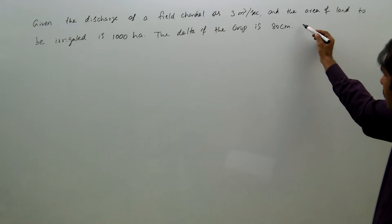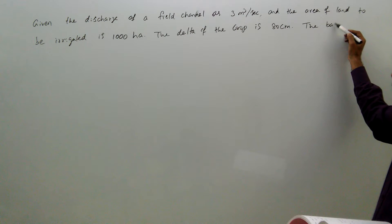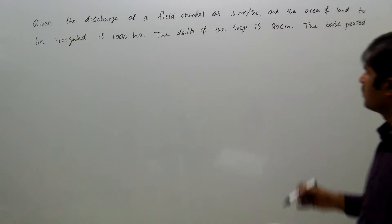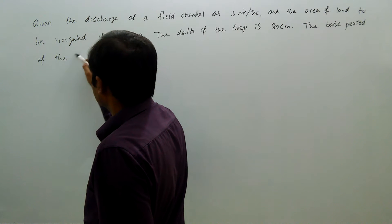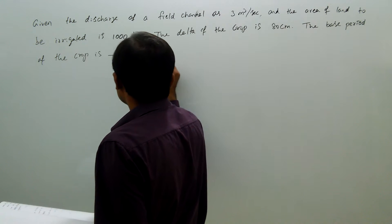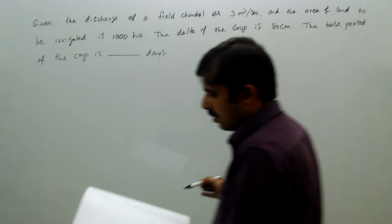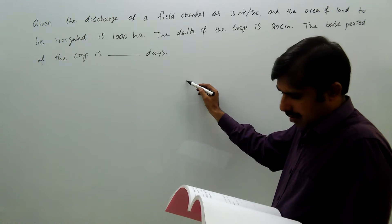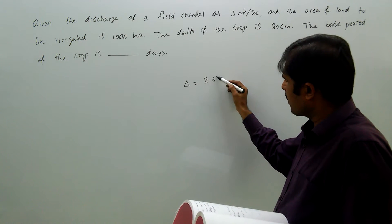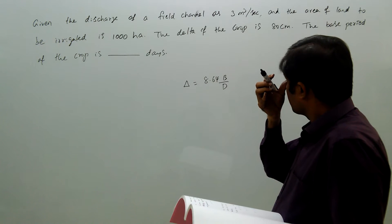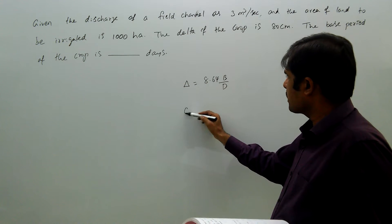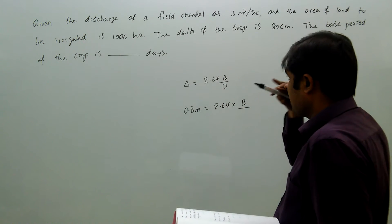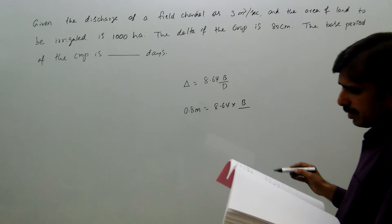The base period of the crop. We know delta equals 8.64 B by D. So, delta is given as 80 centimeters, that is 0.8 meters, equals 8.64 B by duty. So, duty we need to find.